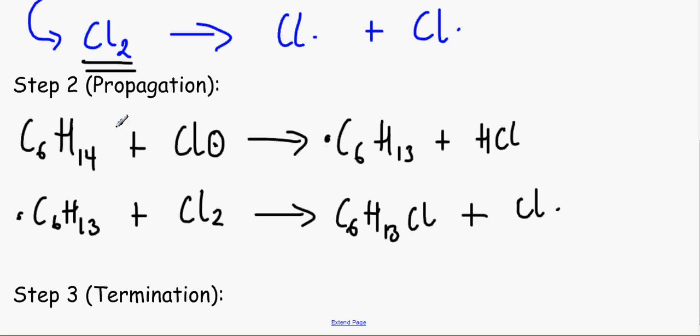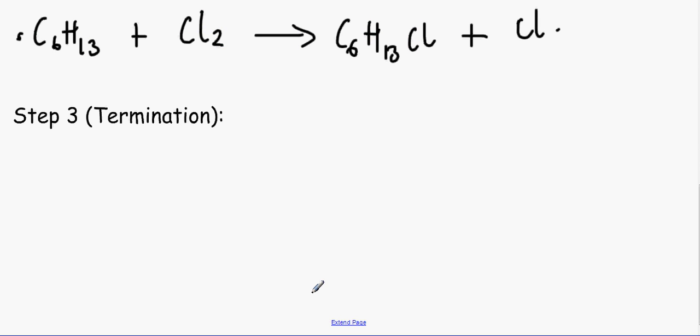To make C6H13Cl plus the chlorine radical. As you can see, because we have lots of this in excess, everything is in excess, we can have this chlorine radical reacting with hexane again to make C6H13 radical, and it goes on and on in a cycle.